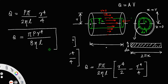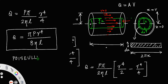This is the expression for the rate of flow through a cylindrical pipe. The rate of flow depends upon the pressure, the fourth power of the radius of the pipe, and is inversely proportional to the coefficient of viscosity and the length of the pipe. This equation is called the Poiseuille equation.